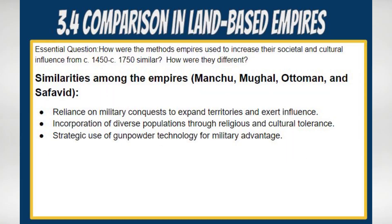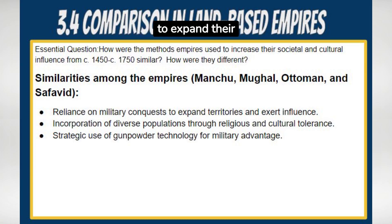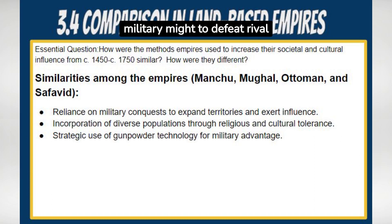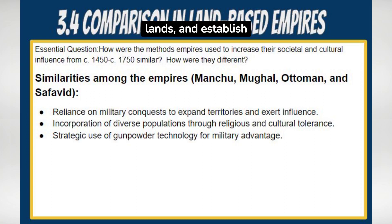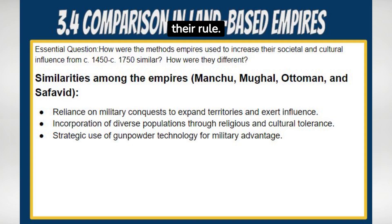Similarities. Military conquests: all four empires relied on military conquests to expand their territories and exert influence over diverse populations. They used their military might to defeat rival powers, seize lands, and establish centralized control. This conquest-driven approach allowed them to incorporate diverse populations under their rule.